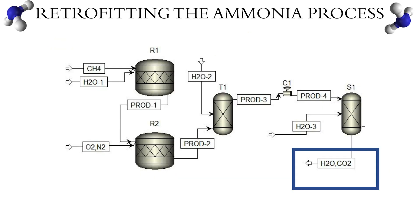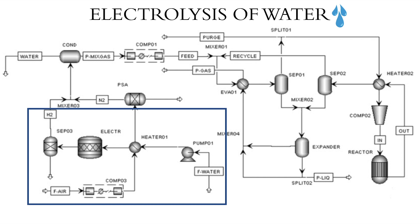For our design proposal, we will be focused on retrofitting the hydrocarbon reforming step from methane, as this is a direct source of carbon dioxide and what renders the process an environmental hazard. Our first design makes use of air and water as the initial feed streams. Here, water is electrolyzed into hydrogen and oxygen. These components enter a separator that extracts the necessary hydrogen input for the modified Haber-Bosch process, while the remaining oxygen is purged from the system.